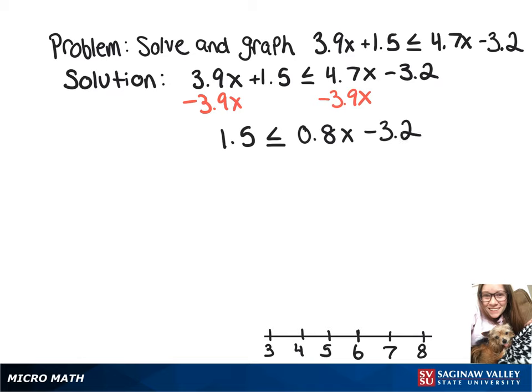So now we're going to add 3.2 to both sides. And that leaves us with 4.7 is less than or equal to 0.8x.